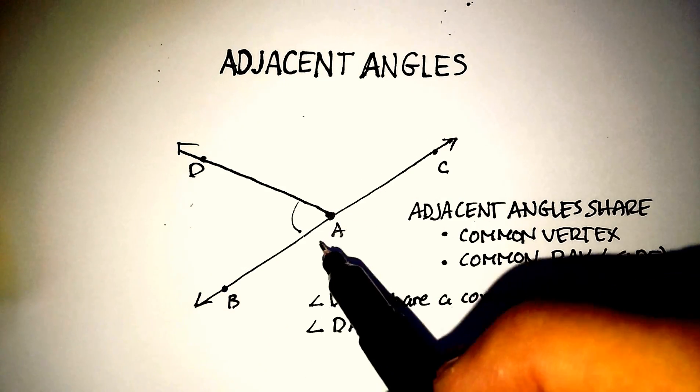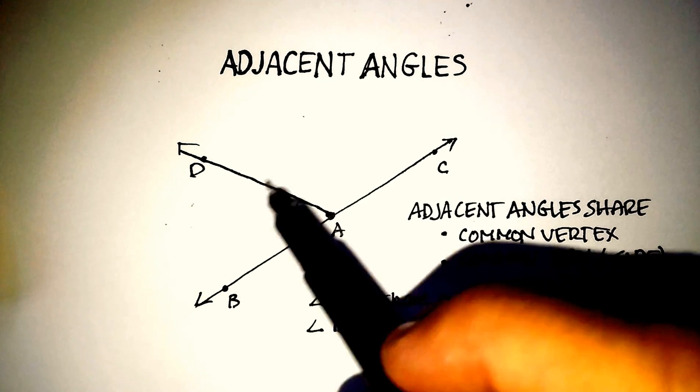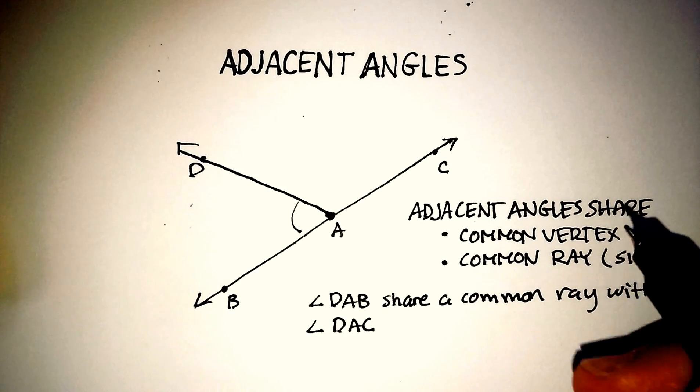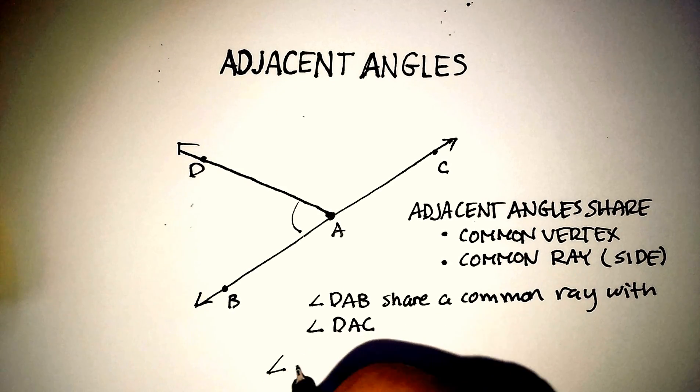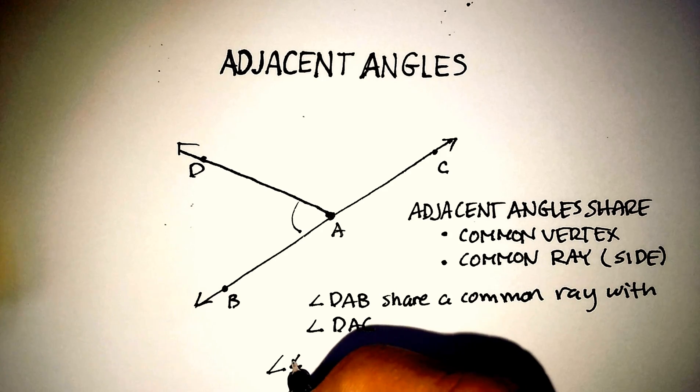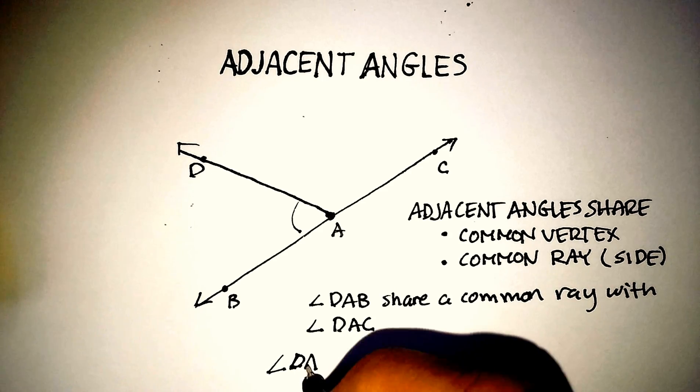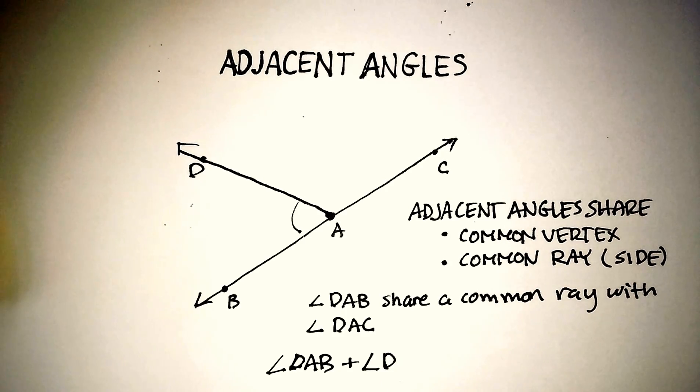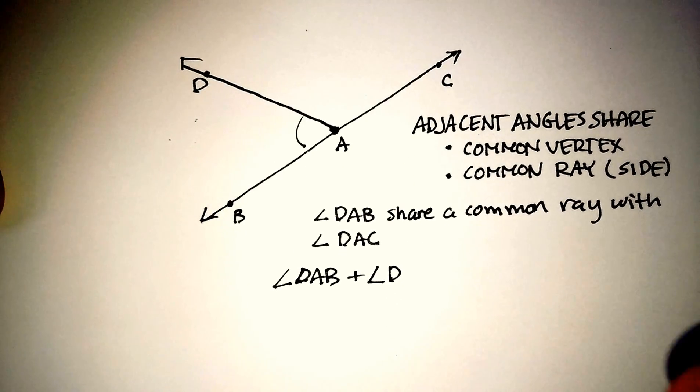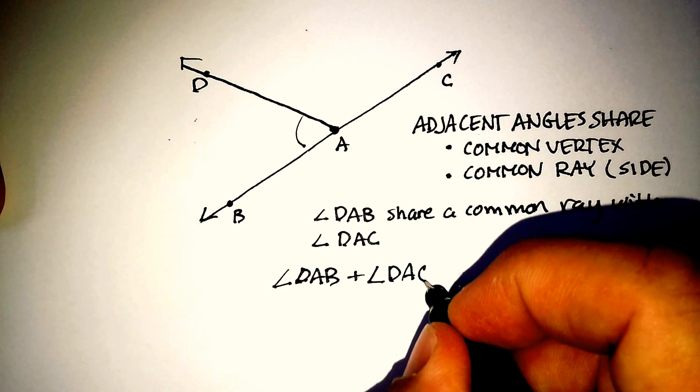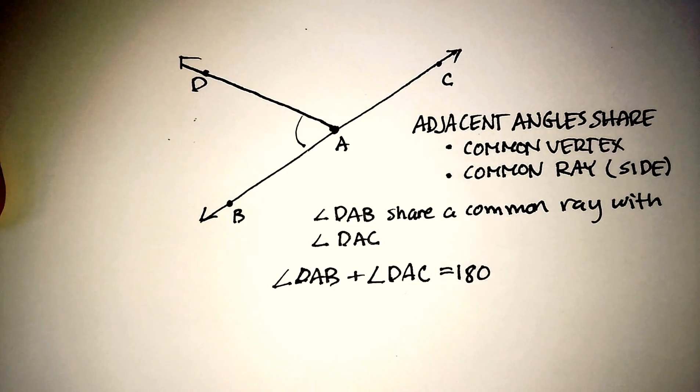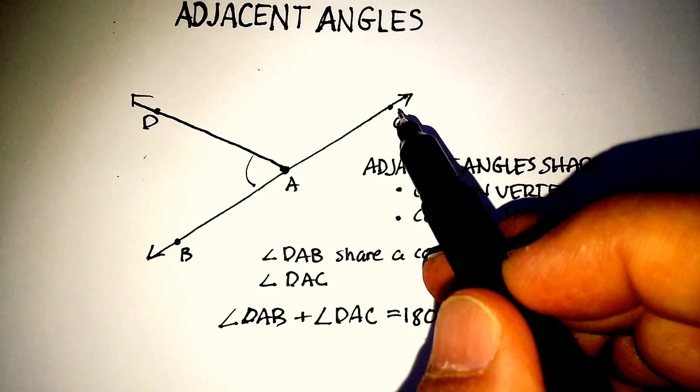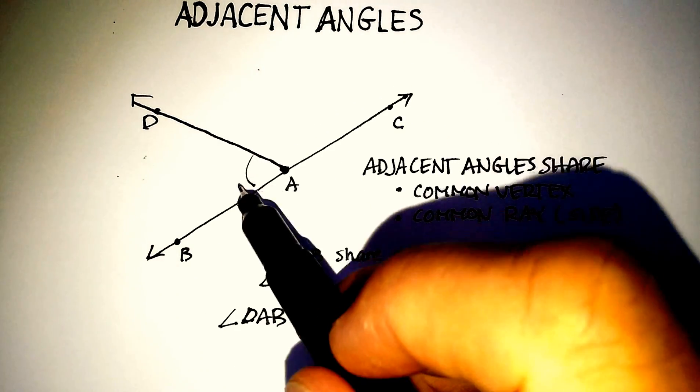Now in this particular case, these adjacent angles are supplementary. Now what does that mean? So angle DAB plus angle DAC are equal to 180 degrees. How do I know that? Because I know that this particular line is a straight line. So these are called supplementary angles.